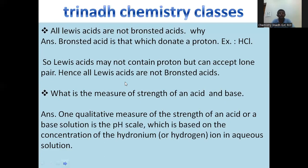All Lewis acids are not Bronsted acids. Bronsted acid is that which donates proton, for example HCl. Lewis acids may or may not contain proton, but can accept lone pair. Hence, all Lewis acids are not Bronsted acids. For example, BF3 is not a Bronsted acid as it doesn't have any protons. But as it is deficient of electrons, it readily accepts the electrons. That's why it is a Lewis acid.